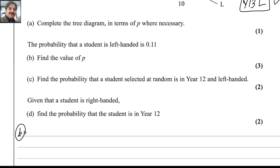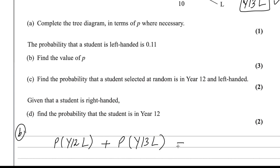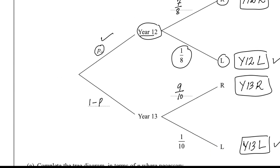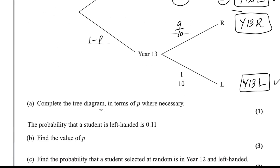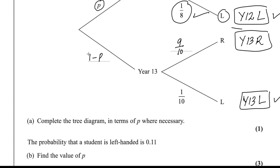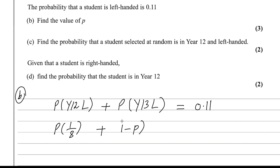For the second part, the probability of Year 12 with left hand plus the probability of Year 13 with left hand equals 0.11. So: P × (1/8) + (1 − P) × (1/10) = 0.11.